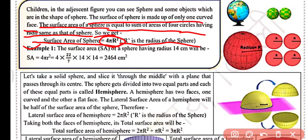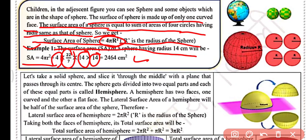Example number 1: the surface area of a sphere having radius 14 centimeter will be equal to 4πr². Here, π is 22/7 and radius is 14, so 14 × 14. After simplifying, you will get 2464 centimeter square, which is the surface area of the sphere.